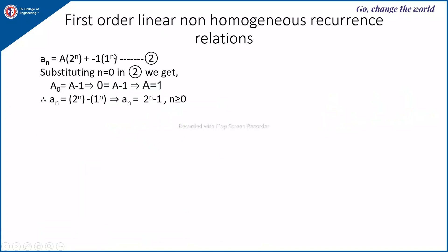Substituting both solutions into equation 1 gives a(n) = A·2^n - 1. Setting n = 0 with a(0) = 0 gives 0 = A - 1, so A = 1. Therefore the general solution is a(n) = 2^n - 1^n, which simplifies to a(n) = 2^n - 1, for n ≥ 0.